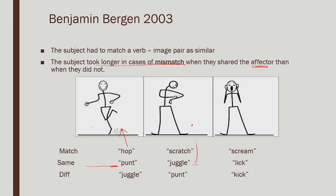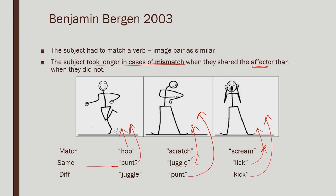Two different kinds of mismatch were used: same affector doing different things — hopping image but the word says 'punt'; or different affector — screaming image with the word 'kick.' Subjects took longer in mismatch cases when they shared the affector than when they did not. When the image shows the stick figure screaming and the word is 'kick,' subjects took considerably less time to say they do not match. But when the affector is the same — hand in image doing one thing, hand in word doing another — there is a conflict and an interference effect is seen in longer reaction time.